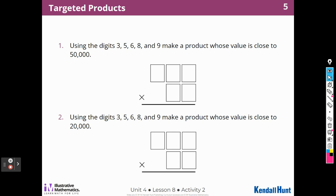So we're going to use the digits 3, 5, 6, and 8, and 9, and make products whose values close to 50,000. Wow. So I'm going to have to think about what times what is going to give me close to 50,000. So I can only use these factors, these digits in my numbers, and I want to get to 50,000.